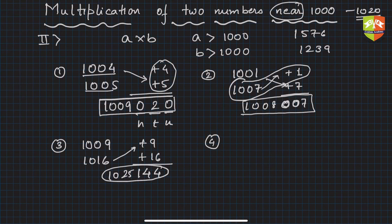Another one. Let's take another one. So let's say you have to do 1012 and 1015. Now numbers are little bigger. So again, plus twelve, plus fifteen, but still manageable. So twelve times fifteen is 180.